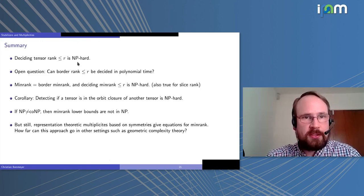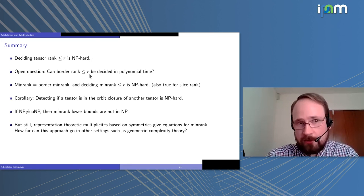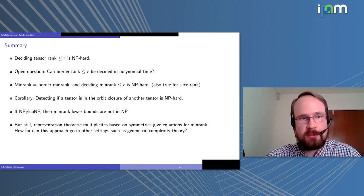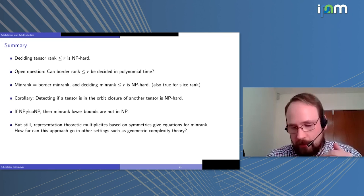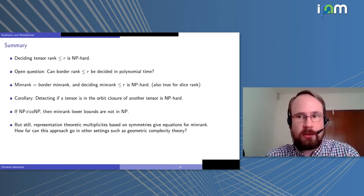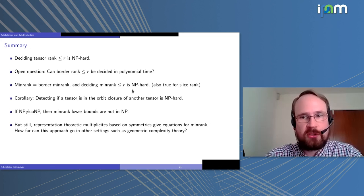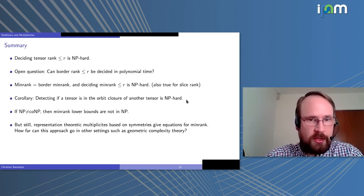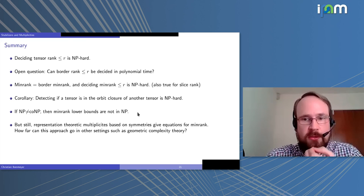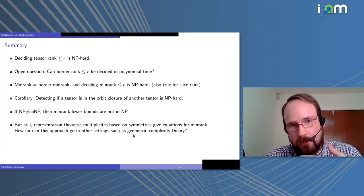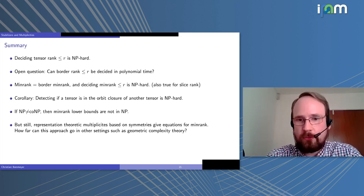To summarize: deciding if tensor rank is at most R is NP-hard; deciding if border rank is at most R is of unclear complexity. Min rank equals border min rank, and deciding if min rank is at most R is NP-hard. Similar arguments apply for slice rank, giving NP-hardness there too. As a corollary, detecting if a tensor lies in the orbit closure of another is NP-hard. If NP ≠ co-NP, min rank lower bounds are not even in NP — yet representation-theoretic multiplicities based on tensor symmetries do give equations for the min rank variety, raising the vague but important question of how far this multiplicity approach can go in other settings, such as geometric complexity theory.